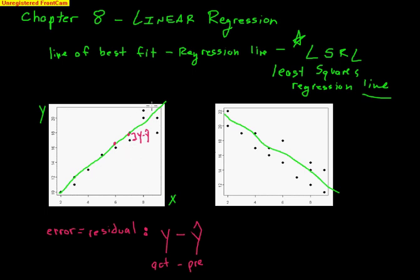Every point has a residual value. If you're below the line, actual minus predicted gives a negative residual. Points above the line have a positive residual. We have a pretty big negative residual here, a very small positive residual, a very small negative residual, and a point that falls right on the line — residual of zero. Over on the second graph we're a bit more scattered, so residuals are a little bigger. A residual is simply the difference between the actual y value from the point versus the predicted y value from the line.